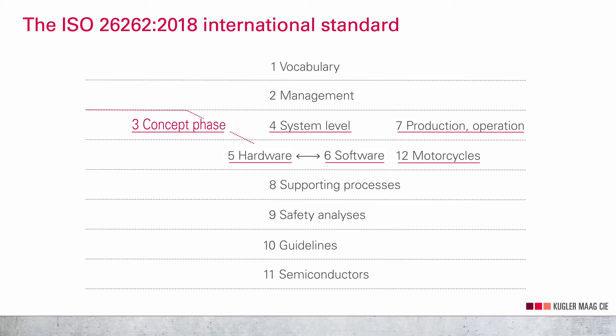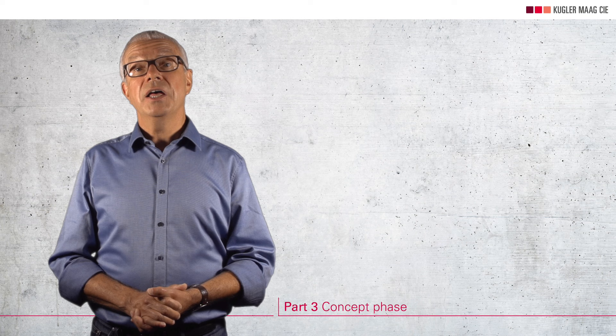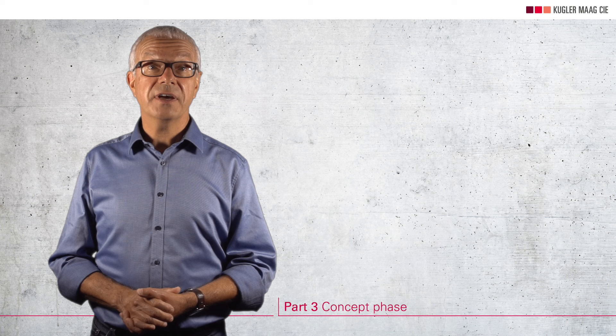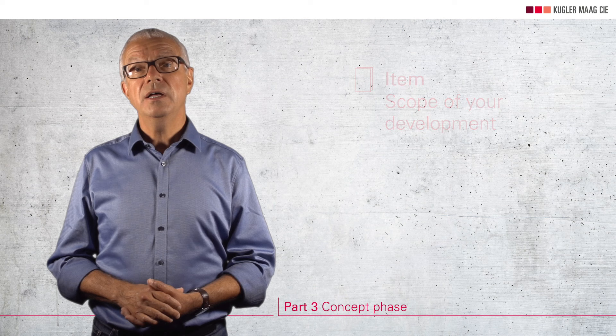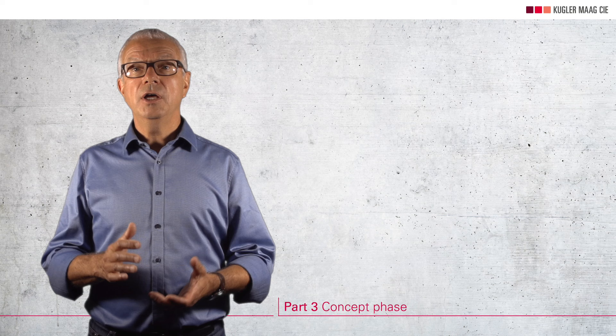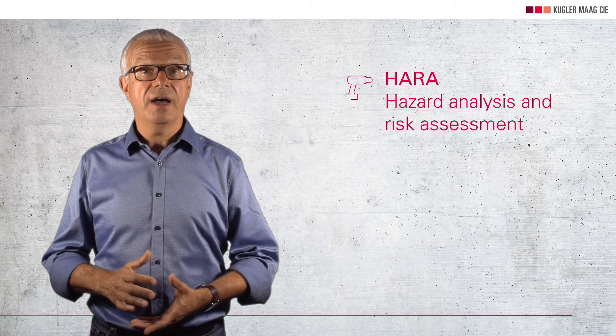Parts 3 through 7 of ISO 26262 give guidance on different phases and disciplines, from the early concept stage to the junkyard. The structure of these parts follows the V-shape of the system development life cycle. Part 3 is called the concept phase. This early stage of vehicle and feature development is typically performed by the car maker. Development starts with defining the scope, which is called the item in ISO 26262. Then we come directly to our first real functional safety activity: performing a so-called hazard analysis and risk assessment.